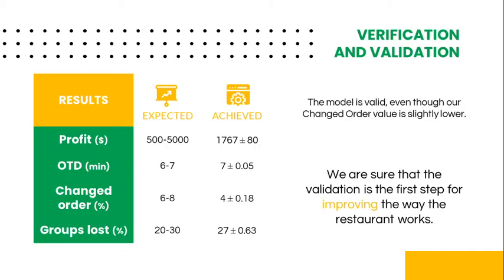As you can see in this table, the profit, the order to delivery time, and the percentage of customers lost verify the required parameters. Even though our change order value is slightly lower, we can consider that the model is valid. This is the first step towards the improvement of the restaurant.